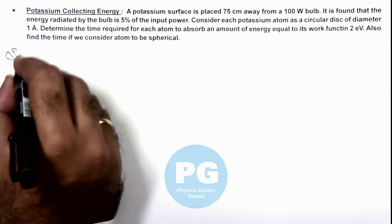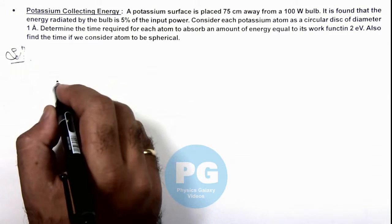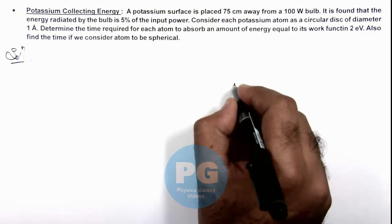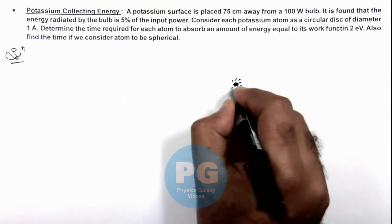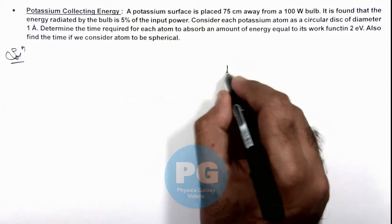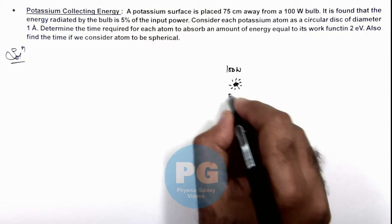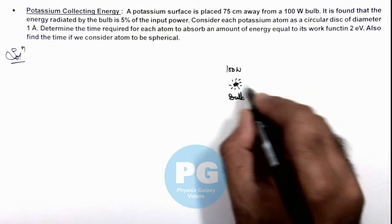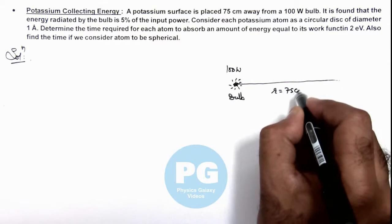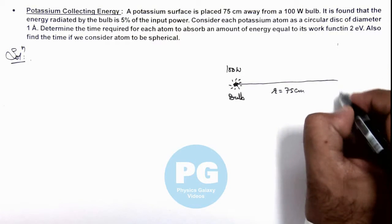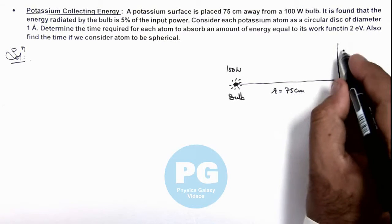In the solution, if we have a bulb located at a point radiating energy in all directions with 100-watt power, and from the bulb at a distance r = 75 centimeters we have a potassium surface.